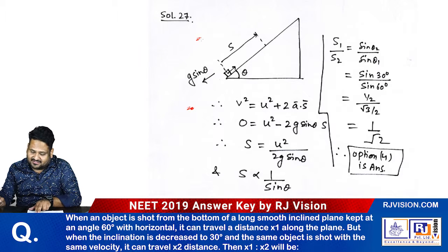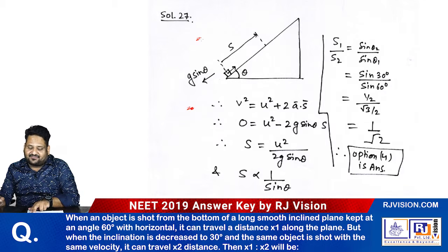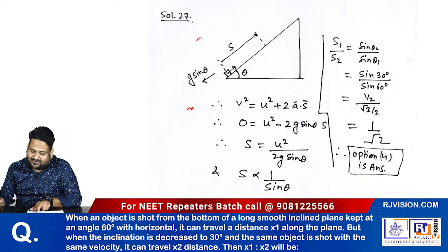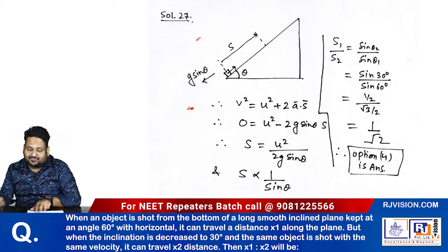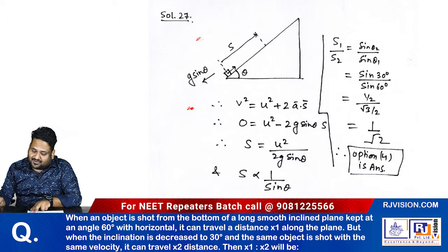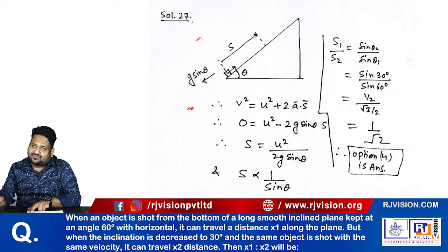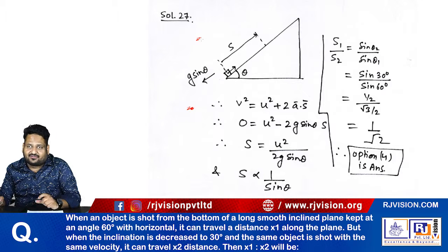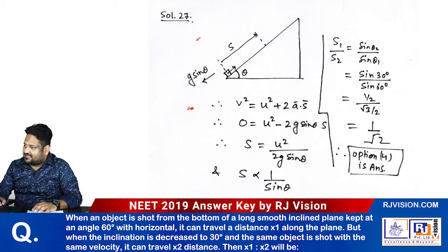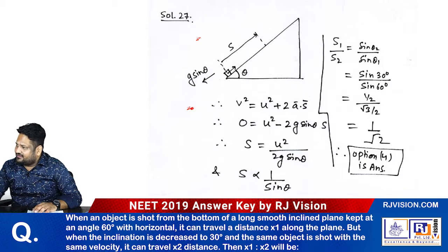It can travel the distance x1 along the plane. But when the inclination is decreased to 30 degrees, the same object is shot with the same velocity, it can travel the distance x2. Then the ratio of x1 by x2 will be—that is your question.